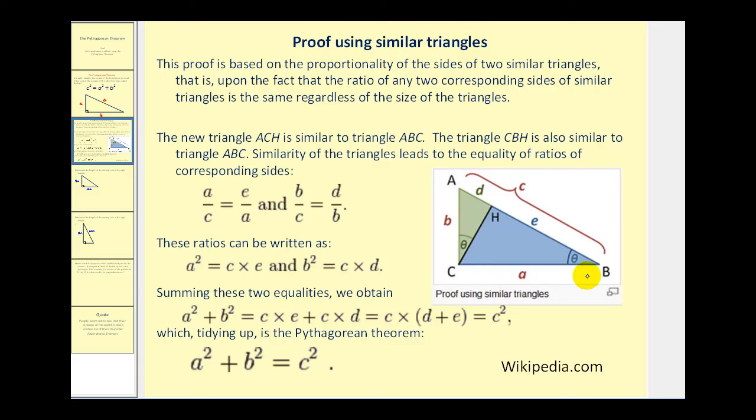If you start with a larger right triangle ABC and you construct an altitude from vertex C to side AB, you form two smaller right triangles that are similar to the larger right triangle. Remember in similar triangles the corresponding sides will be proportional.